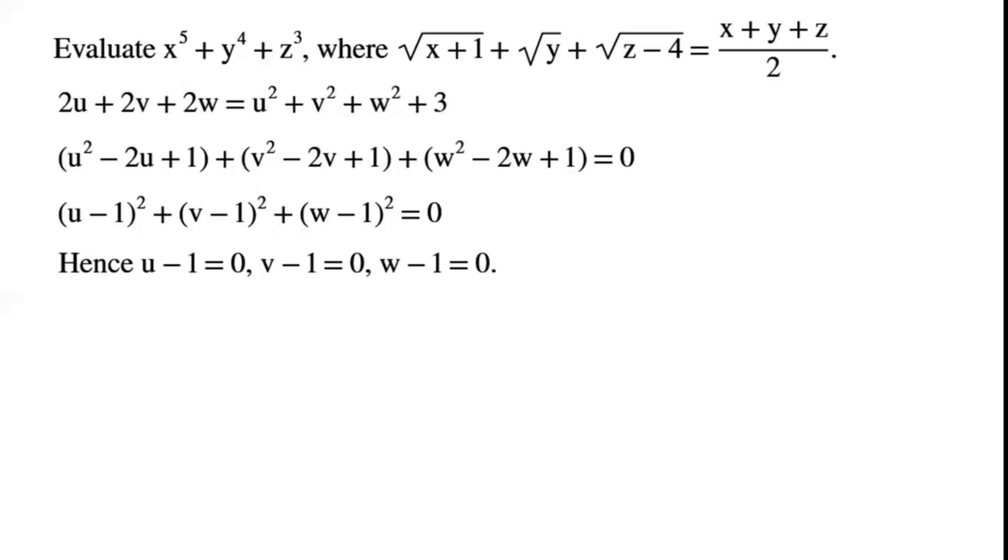So each perfect square must equal 0. So u minus 1 equals 0, v minus 1 equals 0, w minus 1 equals 0. By rearranging these equations, u equals v equals w equals 1.